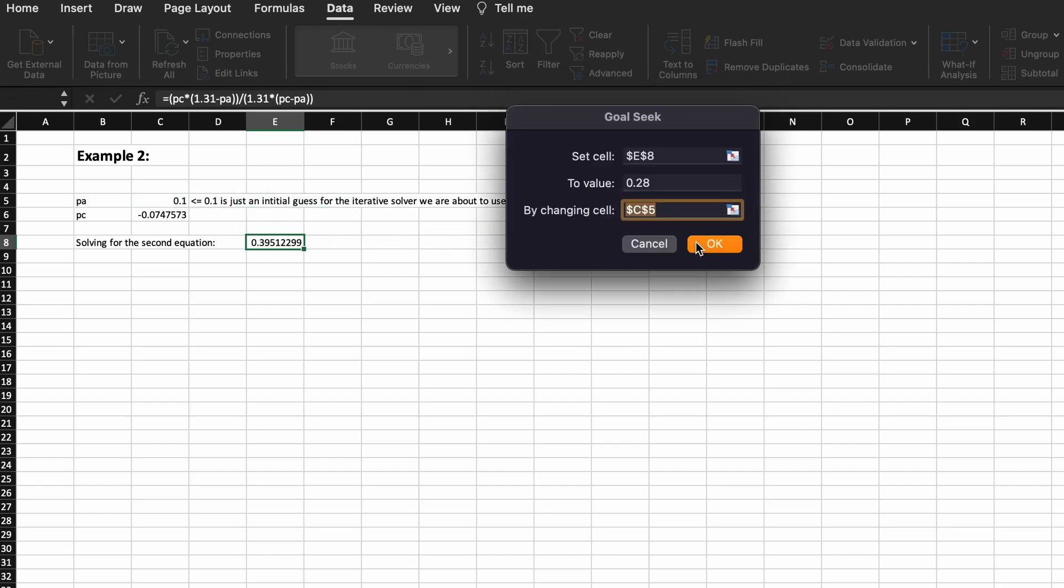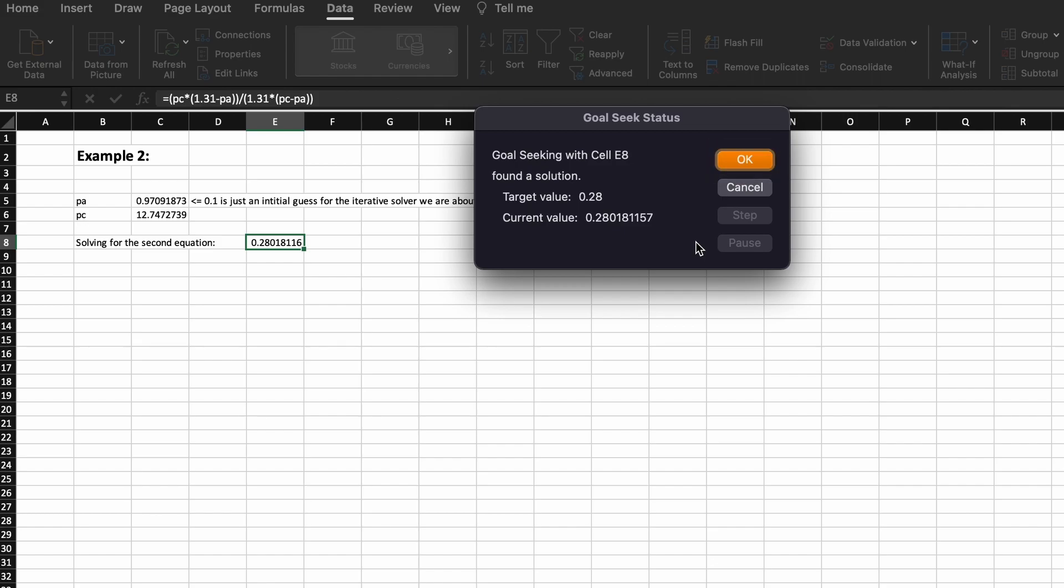Then by running goal seek we can see that our second equation here is iteratively solved and PA and subsequently PC are both solved.